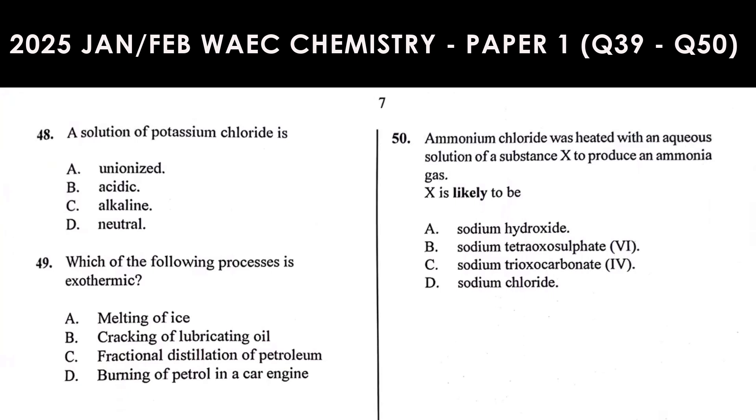Question 48: A solution of potassium chloride is? Potassium chloride is a product of potassium hydroxide and hydrochloric acid, a strong base and a strong acid. Each of them would cancel out themselves in the solution. The hydroxide ion from this base and the hydrogen ions from this acid would cancel out themselves, giving us a neutral solution. This means that potassium chloride does not undergo hydrolysis.